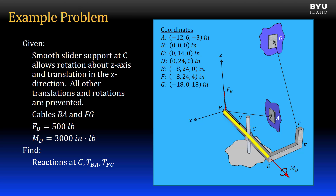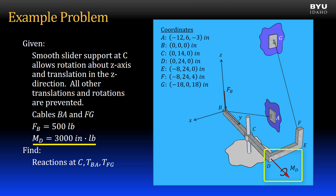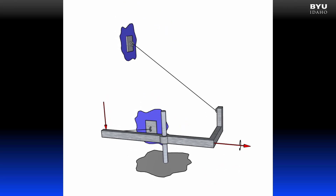In this example problem we have a bar that extends from B to C to D along the positive y-axis, then bends 90 degrees from D to E in the negative x direction, then bends 90 degrees from E to F in the positive z direction. There is a smooth slider support at point C which allows rotation of the member about the z axis and also allows translation in the z direction — it can slide freely up and down the vertical support. All other translations and rotations are prevented at the support. There are also two cable supports, one from B to A and one from F to G. There is an applied force of 500 pounds at point B acting in the negative z direction, and an applied moment at point D acting in the positive y direction. This animation may help you visualize the member and its supports.